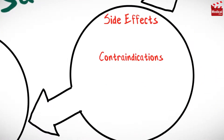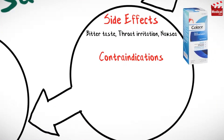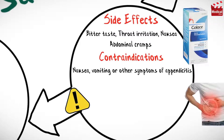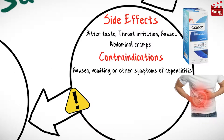Docusate may frequently cause bitter taste, throat irritation, and nausea — more common with syrup and liquid formulations — and abdominal cramps also occasionally occur. Docusate is contraindicated in cases of nausea, vomiting, or other symptoms of appendicitis, acute surgical abdomen, or fecal impaction.